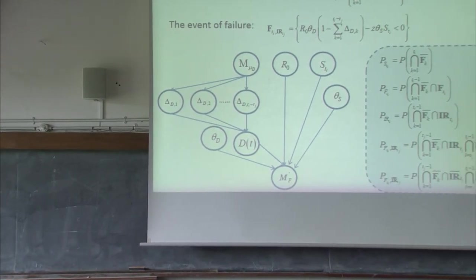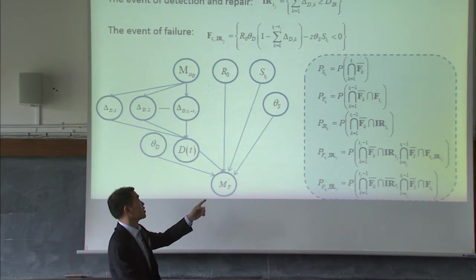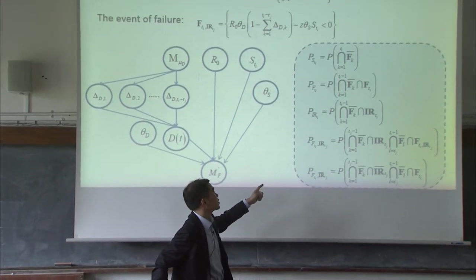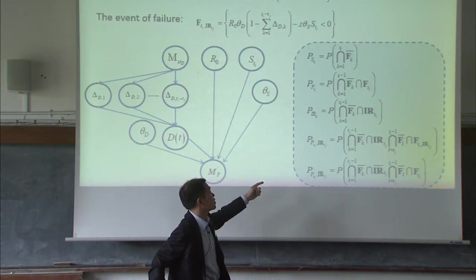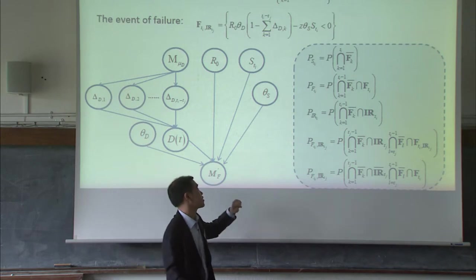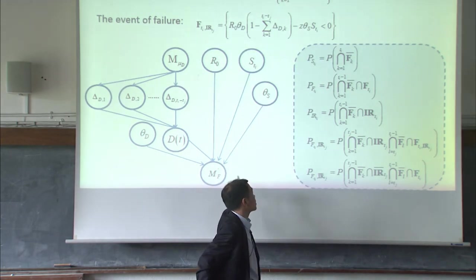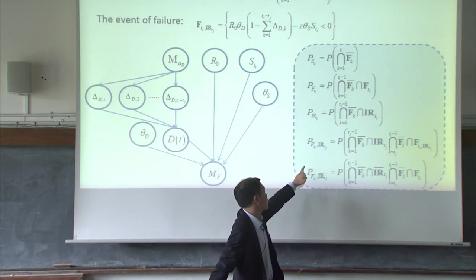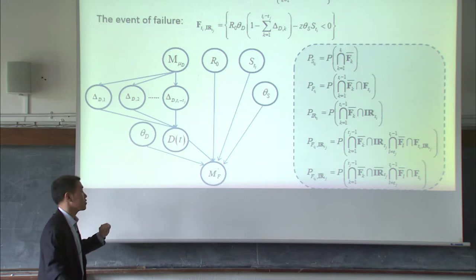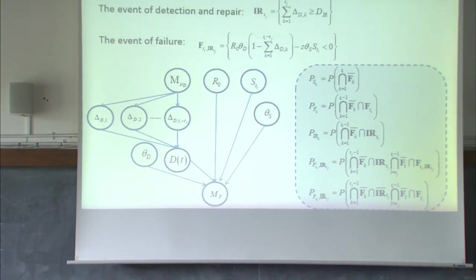There are five probabilities to calculate. The first is probability of the structure surviving at year TI. The second is failure at year TI — meaning we survived all years before TI, then finally failed. The third is repair at that year — survived, then repair because we do inspection. The fourth is we do repair but fail afterwards. The last is we do not repair but also fail before end of service life. Those are the five probabilities we formulate.